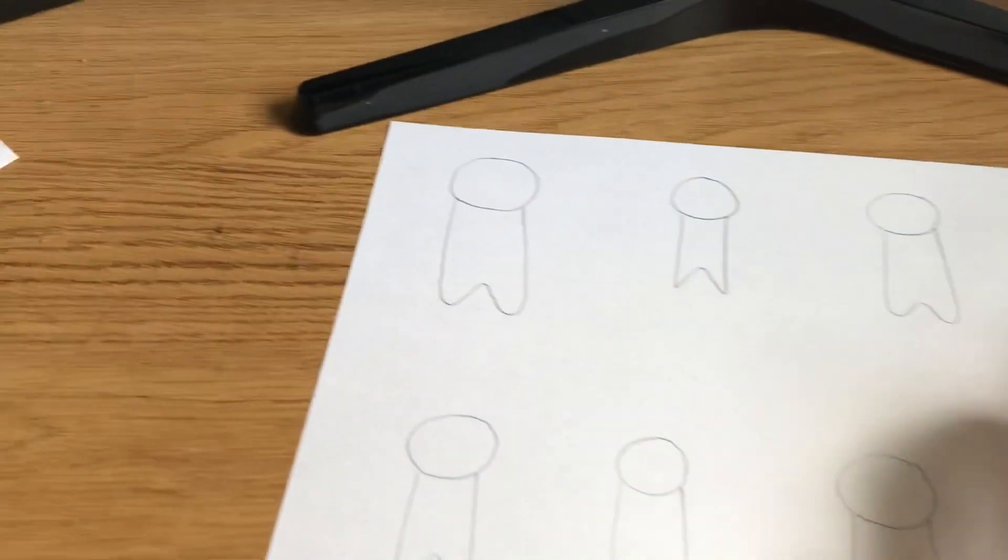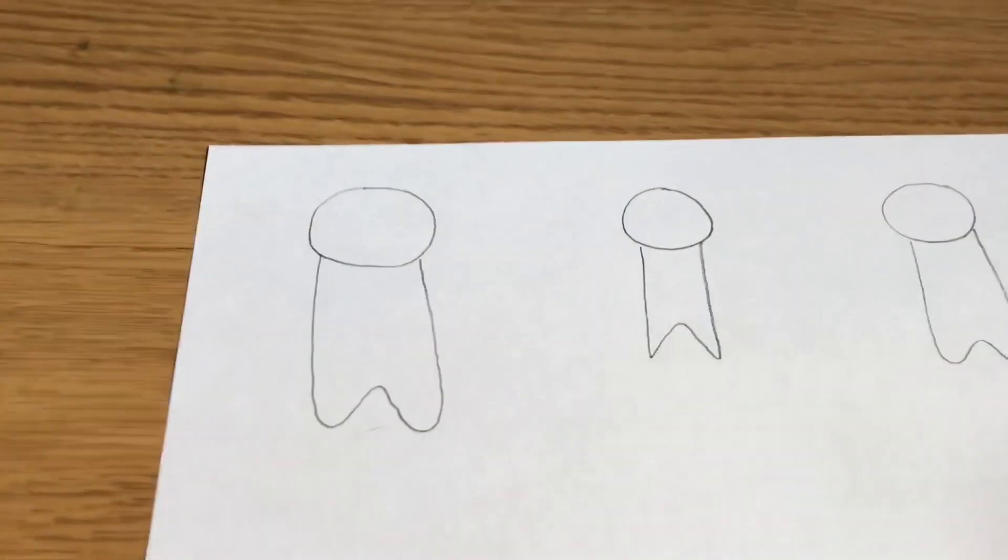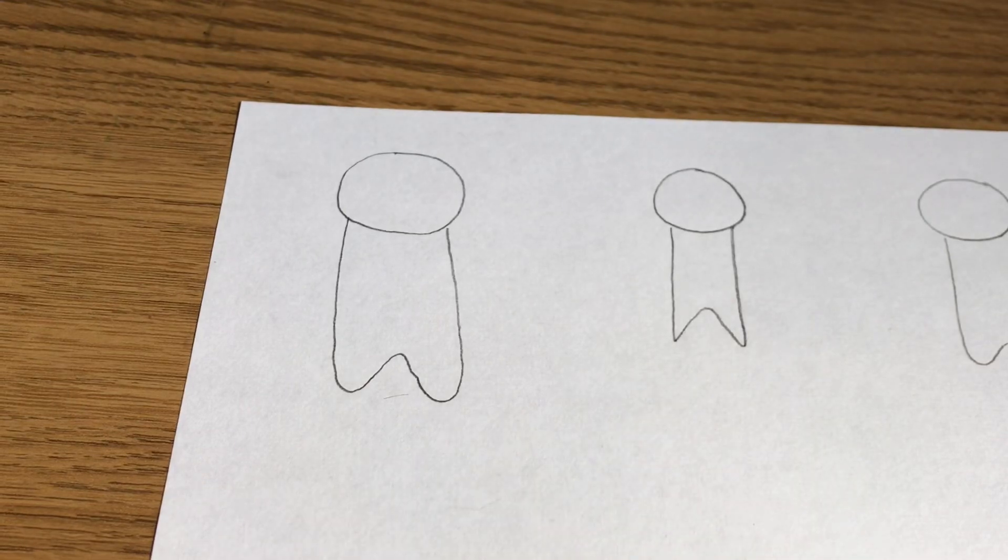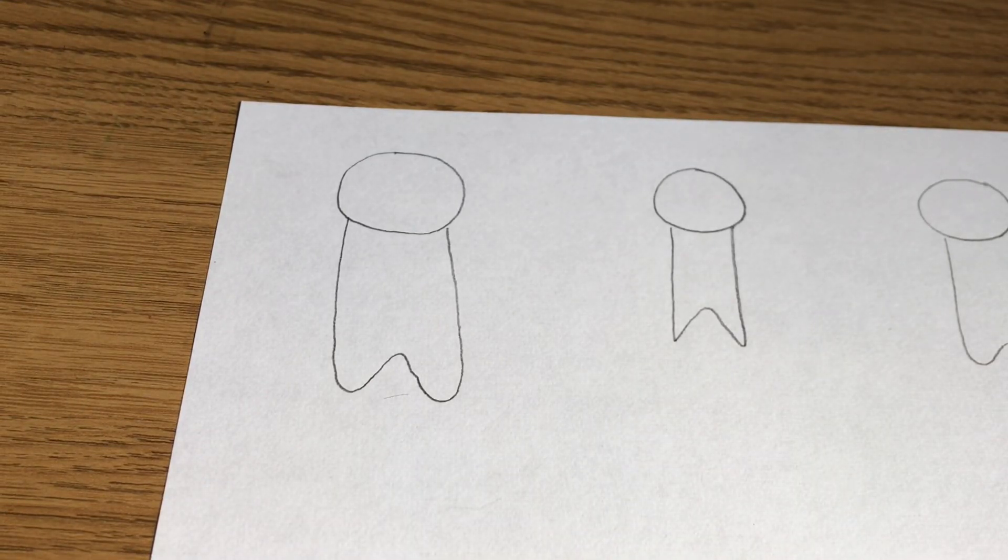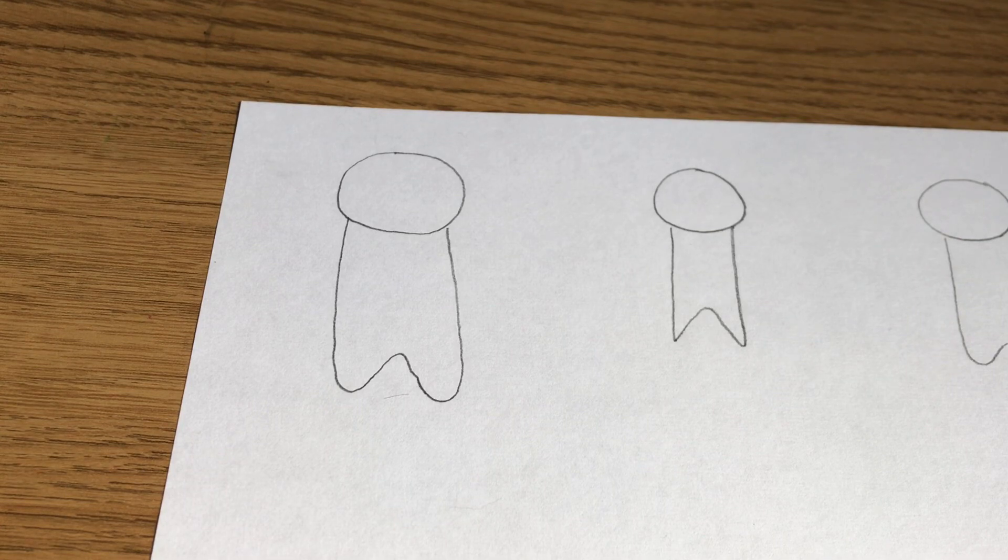So here are my eight different animals. You can see they're all slightly different sizes, different widths, but they're essentially all a circle and a W. Now simply by adding a few simple shapes as features, we can create lots of different animals. So let's see if you can guess what animal I'm going to do first.